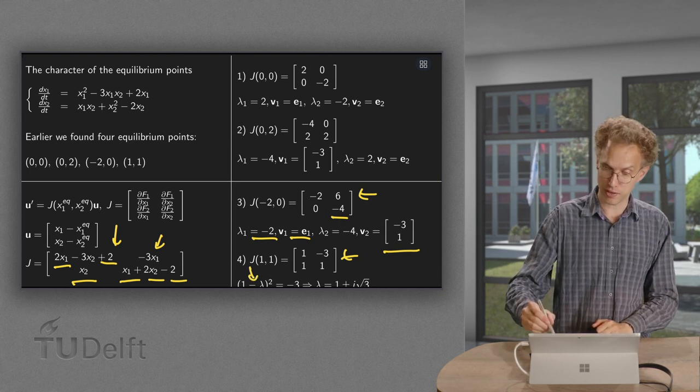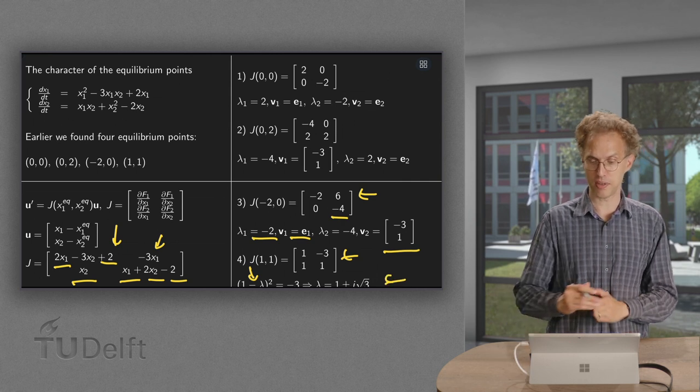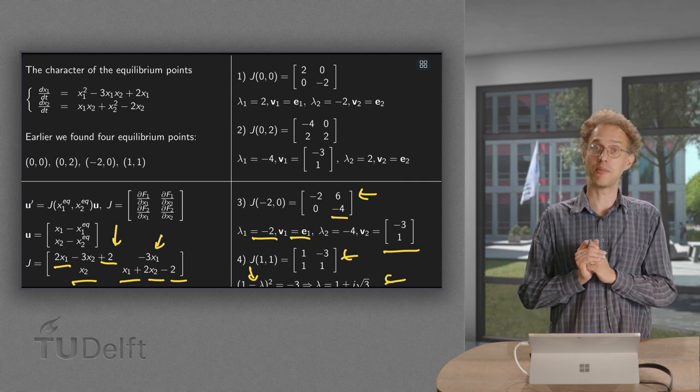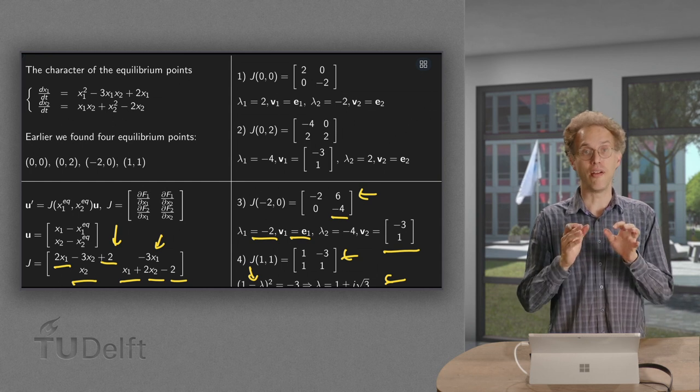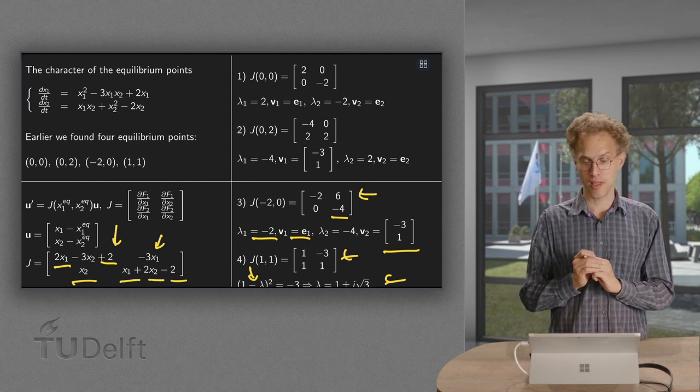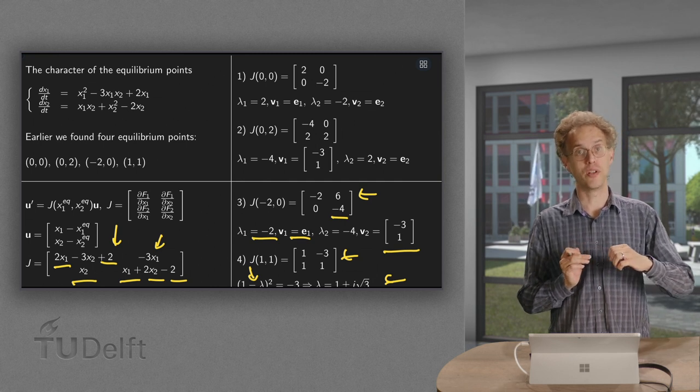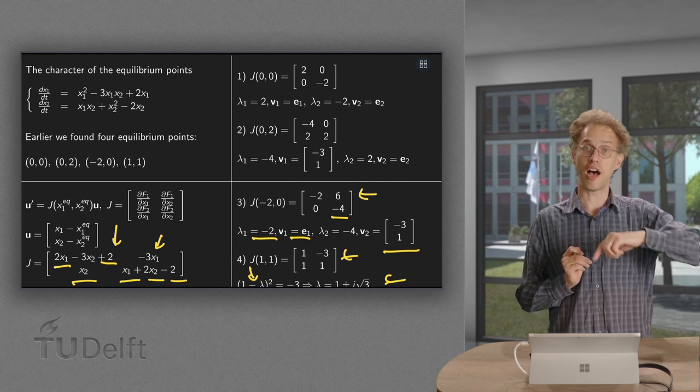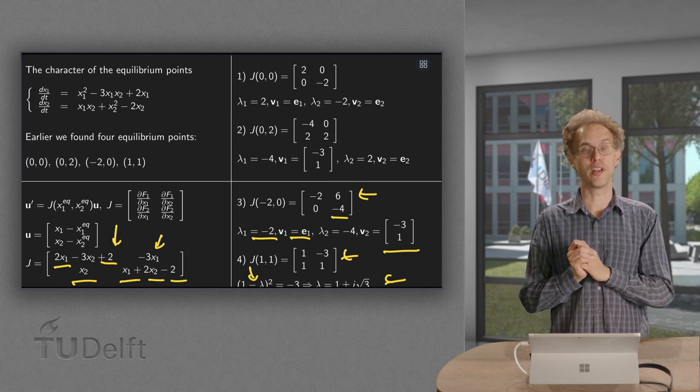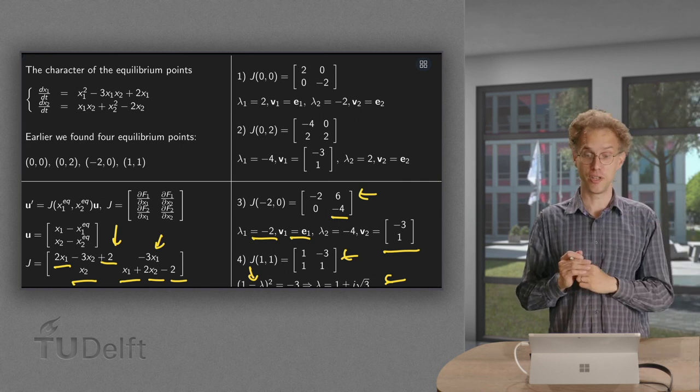So now we have complex eigenvalues and we have λ equals 1 plus or minus i times the square root of 3. And we won't need the eigenvectors here. So this will give us a spiral point and we will spiral outward because we have a plus 1, so we have a positive real part.